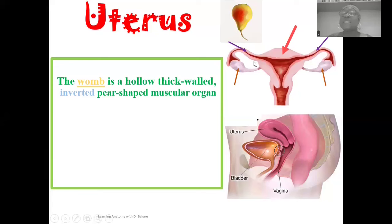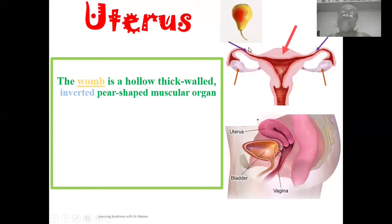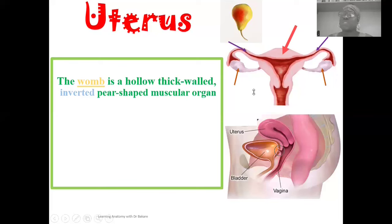A mature egg released by the ovary is released into the lumen of the uterine tube, which transports it to the ampulla where fertilization occurs. Upon fertilization in the ampulla region, the fertilized egg then needs to be implanted in the wall of the uterus, so it is taken back into the uterus for final implantation. These three structures — the uterus, the uterine tube, and the ovary — exert integrated functions that ultimately lead to the birth of a baby.